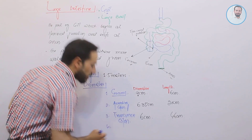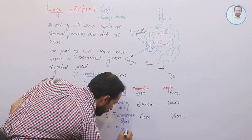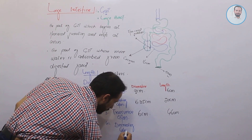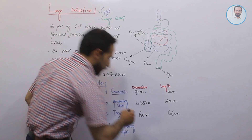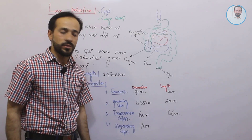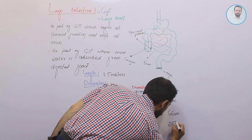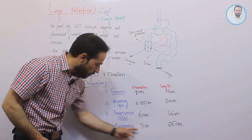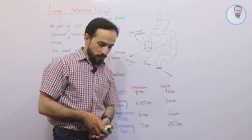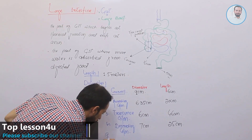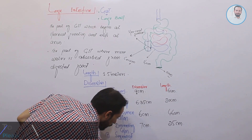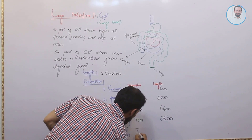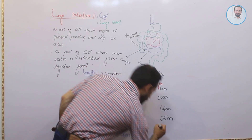The fourth part is the descending colon. Its diameter increases again to about 7 centimeters and its length is about 25 centimeters. The fifth part is the sigmoid colon, which also has a diameter of 7 centimeters and a length of about 35 to 40 centimeters.